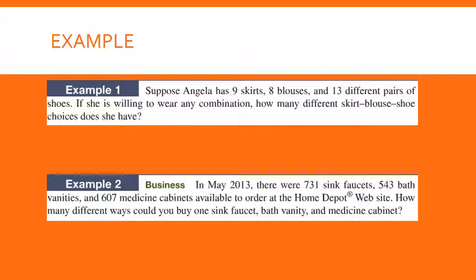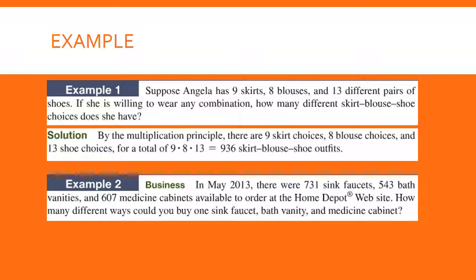Here are a couple of examples — give these a try. Pause the recording while you do that and resume to check your answer. For example one, she has nine skirts, eight blouses, and 13 pairs of shoes. Nine times eight times 13 means she has 936 choices for outfits.